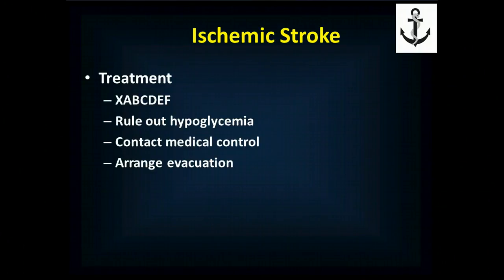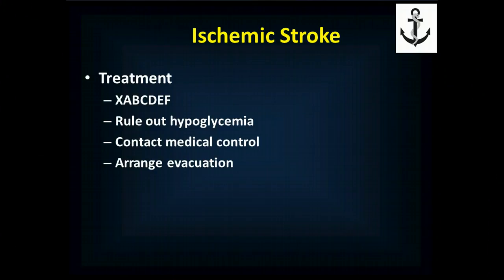For stroke management: XABCDEF, manage airway threats, and rule out hypoglycemia. A patient with low blood sugar can look exactly like a patient with a stroke. There have been people who received TPA — clot-busting medications — because someone forgot to check their blood sugar. If you check the blood sugar first and it's very low, treat the hypoglycemia, they return to normal, and you give them a meal and discharge them. If you give the TPA first, they're now at increased risk of a bleeding-type stroke. So rule out hypoglycemia first, then talk to medical control and arrange for evacuation.